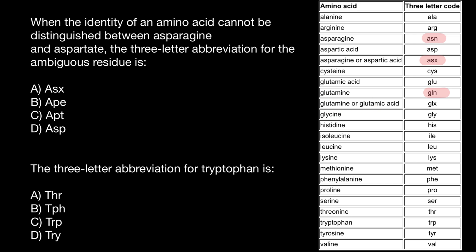We may also have a situation where we are not sure whether we have glutamine or glutamic acid. In that case, the three-letter abbreviation is the first two letters of both amino acids plus X for unknown — GLX. The logic is exactly the same as with asparagine and aspartic acid. So far we have found four such amino acids whose three-letter abbreviation is different from what we might expect.